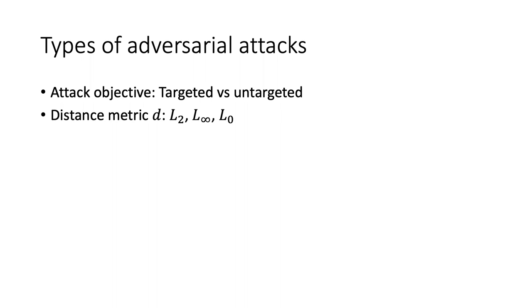People commonly use three types of distance metrics: L2, L infinity, and L0. The L2 distance is the standard Euclidean distance. L infinity distance is the maximum change to any of the pixels, and L0 is the number of distinct pixels.